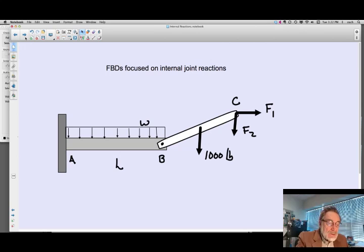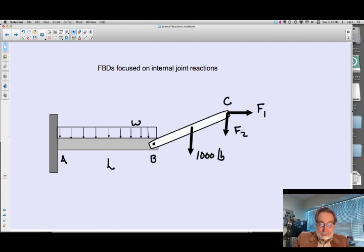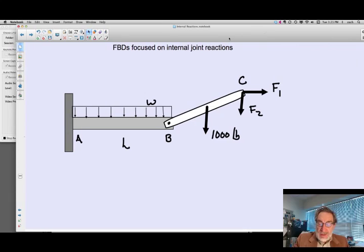What I've got here is somewhat of a complicated beam system. I've got F1 and F2 over here on the right at location C, and I've got this thousand pounds here. The first thing people will probably do is say, well, I need to find out what the internal reactions are at the joint. So they're really joint-specific free body diagrams.